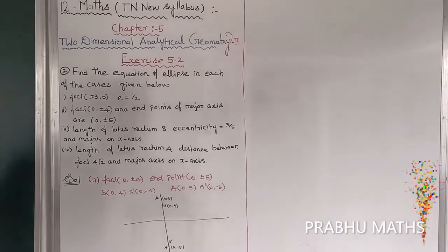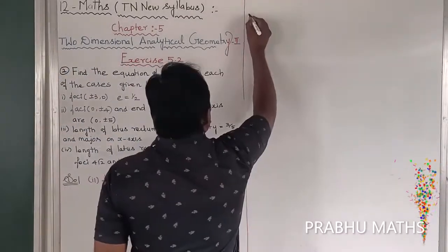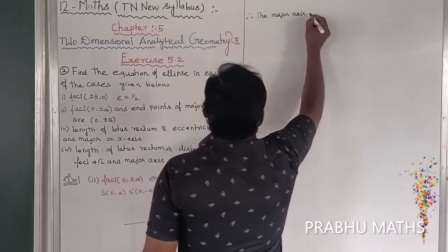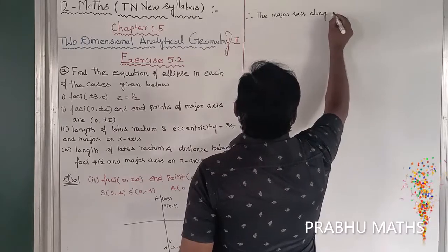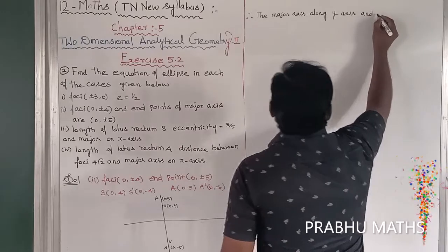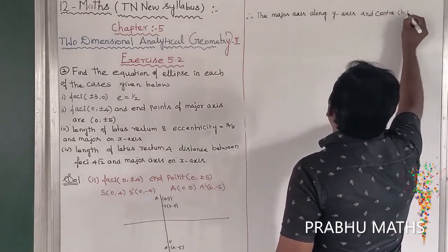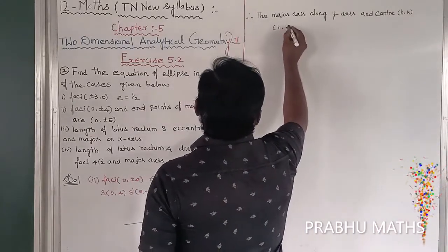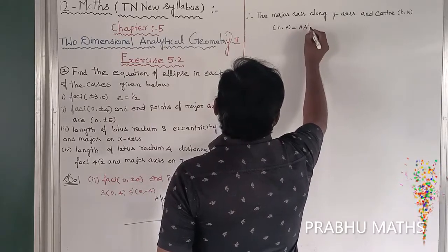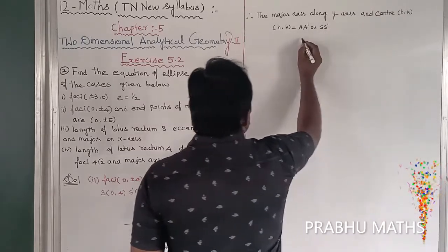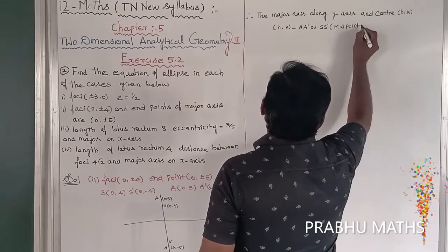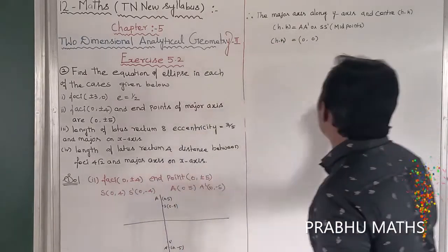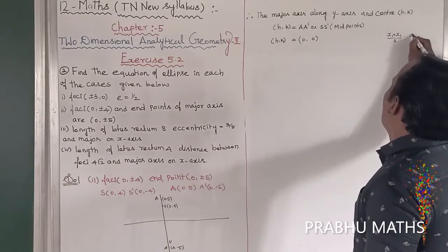So the major axis is the y-axis. Therefore, the major axis is along the y-axis. And the vertices and the center — the center (h, k) is the midpoint of A and A' (or S and S'). The midpoint formula is: x plus x₁ divided by 2, y plus y₁ divided by 2.